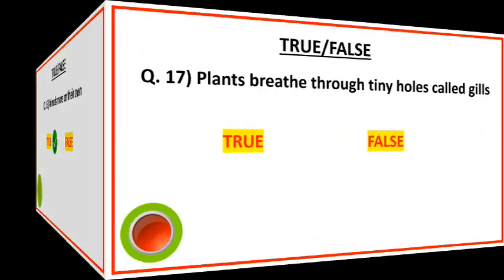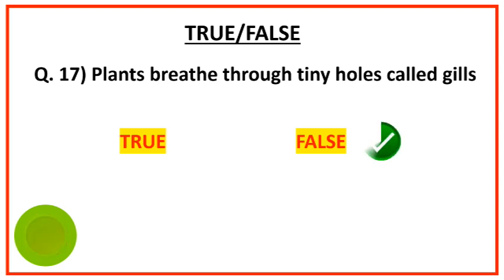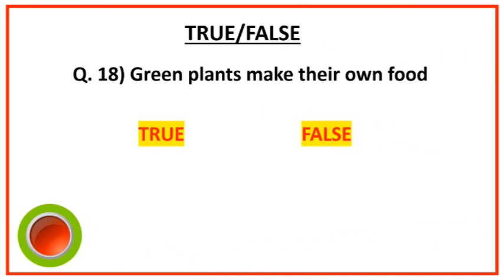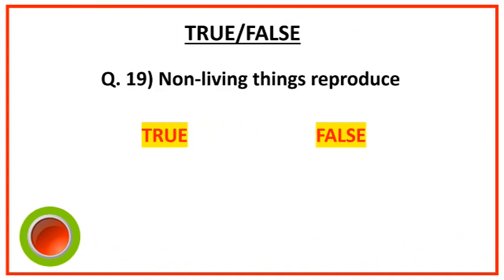True or false: plants breathe through tiny holes called gills. False. True or false: green plants make their own food. True.